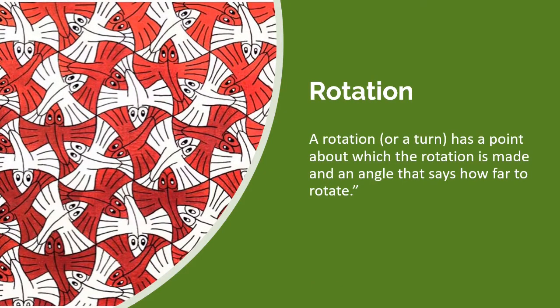The next one is a rotation. A rotation has a point about which the rotation is made in an angle that says how far to rotate. For example, let's look at this figure over here. What happened here? You rotated it by 120 degrees clockwise. After 120 degrees, you go here. After another 120 degrees, you go here. And then after that, you go back here. How did I know that it is 120 degrees? Because to make a complete revolution, you have three congruent figures. So meaning to say 360, you divided it by 3.